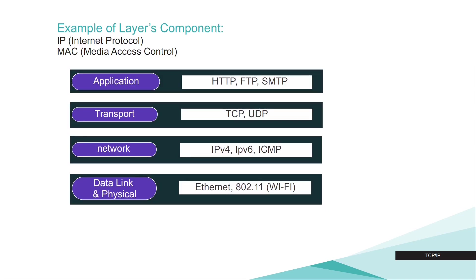What protocols can we see in our layers? In the application layer: HTTP, FTP, and SMTP, among others. In the transport layer: TCP or UDP — only those two. In the network layer: IPv4, IPv6, or the ICMP protocol. For data link and physical: Ethernet or 802.11, which refers to Wi-Fi.